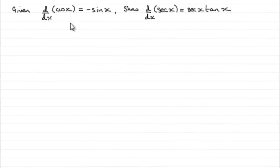We're given that the differential of cos x with respect to x is minus sin x, and we've got to show that if we differentiate sec x with respect to x, it's equal to sec x tan x.